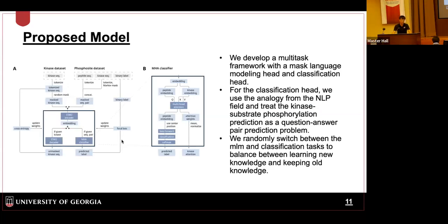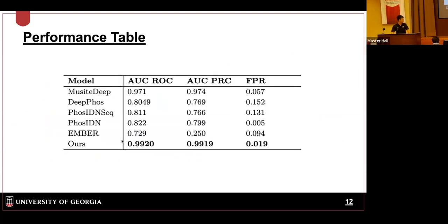This is the architecture of our model. It has two branches. The first branch does continuous masked language modeling to ensure the model understands the kinase language better. The second branch is for classification, where the model predicts the kinase-substrate pair. Comparing our model with other recently published models, our model achieves much better performance in terms of AUROC score, and also has a very low false positive ratio, because of our unique negative data curation approach.